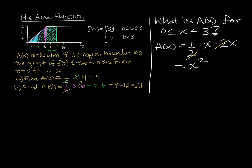Now, what about, what is A of x for x bigger than 3? Well, in that case, we have the area of this entire triangular region plus the area of some rectangular region out to the right. Since x is bigger than 3, we will always have this entire triangular area.